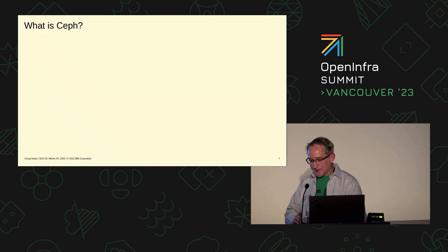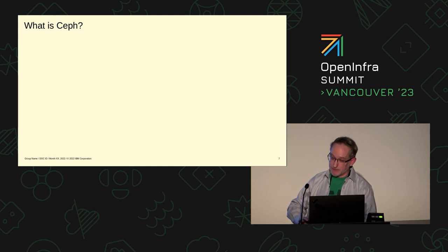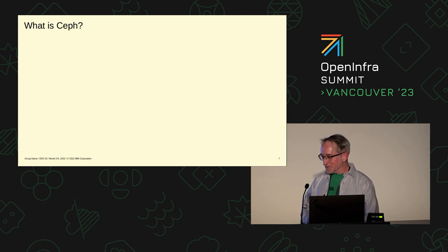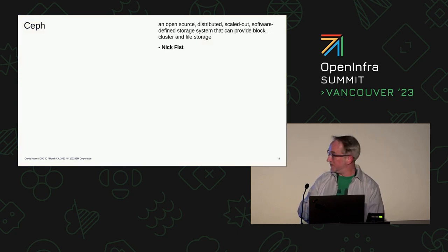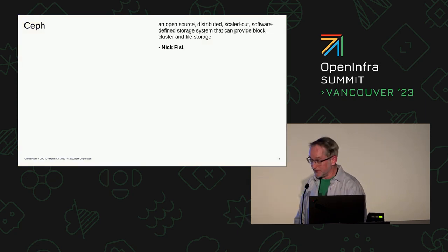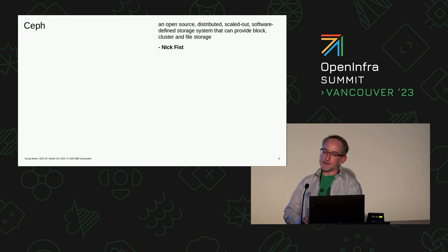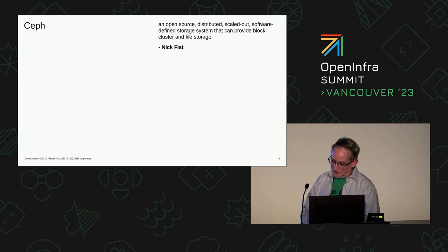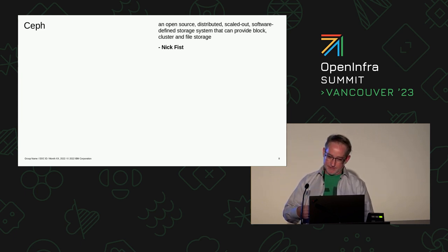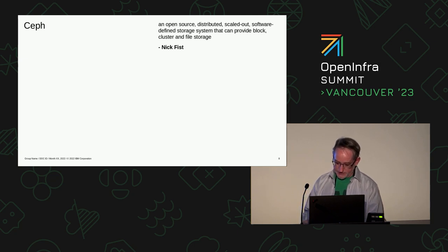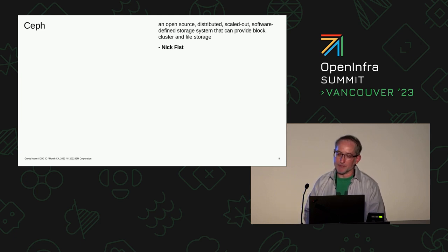In my search for a definition for Ceph, I found many descriptions, some more helpful than others. But eventually I found my perfect dictionary definition, from an author named Nick Fist: Ceph is an open-source, distributed, scaled-out, software-defined storage system that can provide block, object, and file storage. I fell in love with this. It's perfect. Not only does it say what Ceph is, it says what Ceph does — and those last three things, block, object, and file storage, were explicitly broken out.